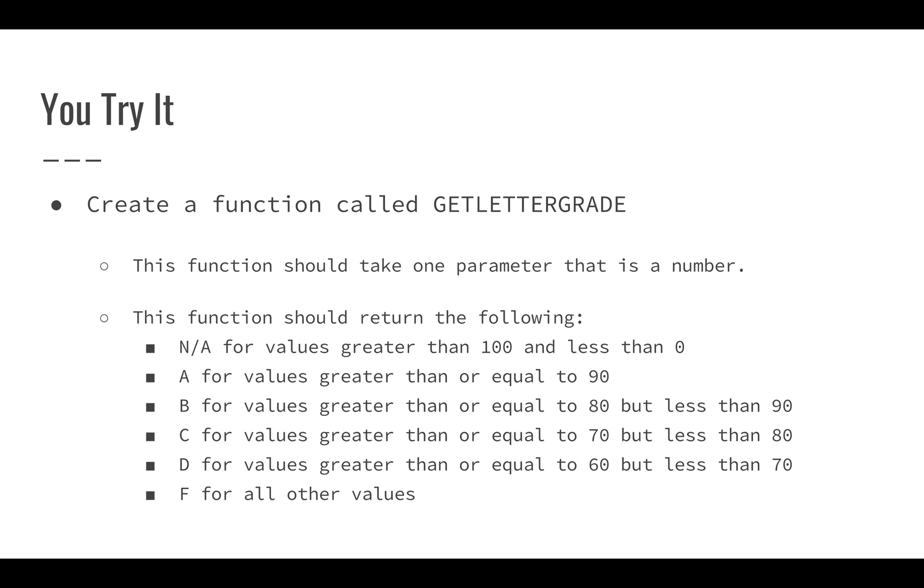If the value is greater than or equal to 90, A. If it's greater than or equal to 80, but not an A, it's a B, and so on, C, D, and F. F for anything that is basically greater than or equal to 0 all the way up to 60 here.